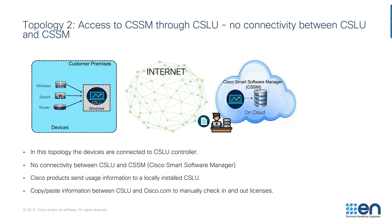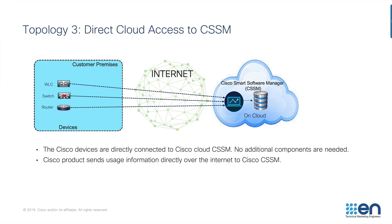Topology 2 is where the 9800 is connected to CSLU but CSLU is not connected to CSSM — it is in an offline mode. In offline mode, it syncs information to CSSM via manually exporting and importing usage files. Topology 3 is the 9800 connecting directly to CSSM without an intermediate CSLU. No additional components are needed here and CSSM gets usage information directly over the internet from the device based on the policy reporting intervals.